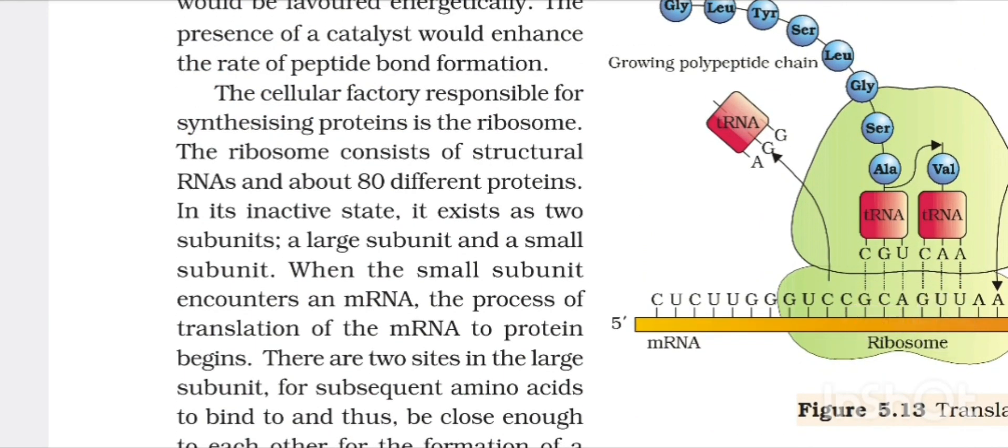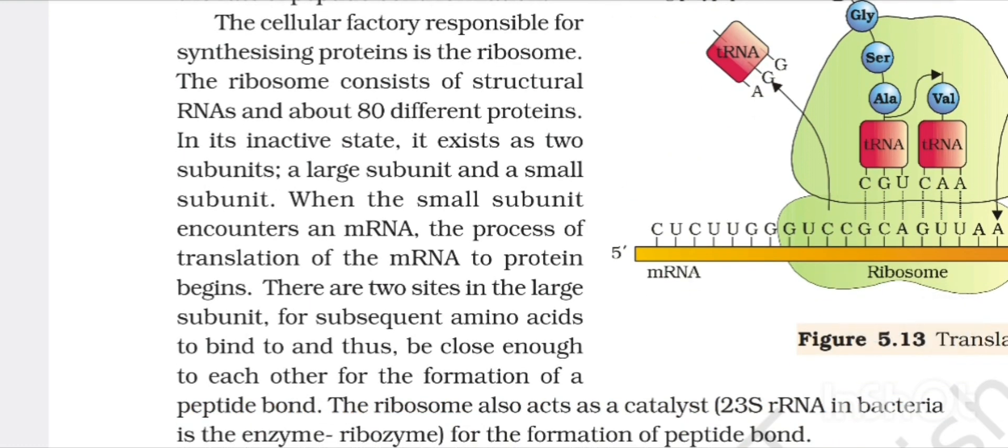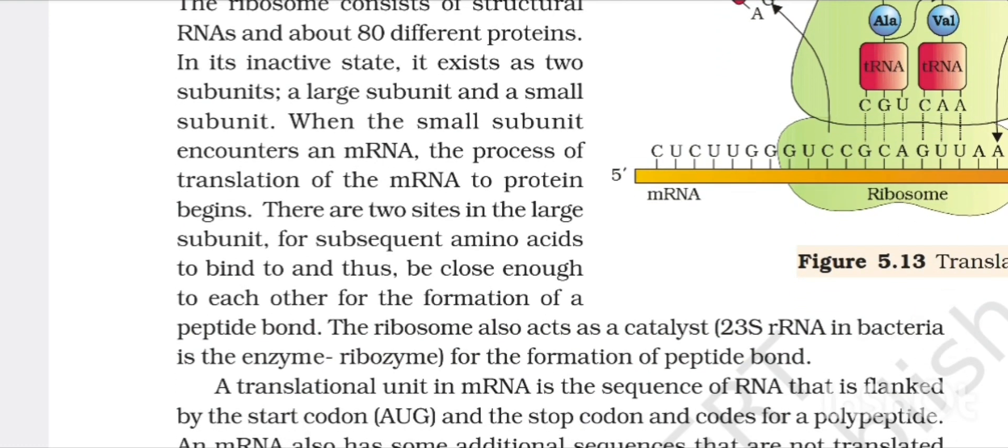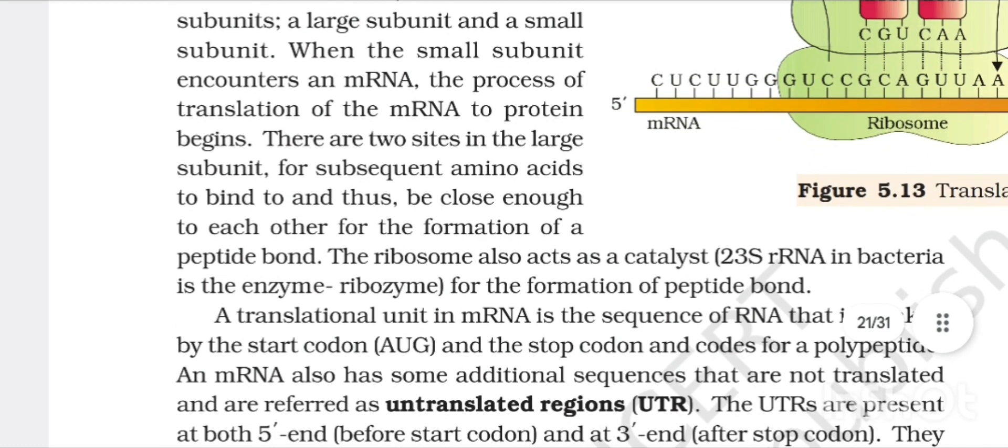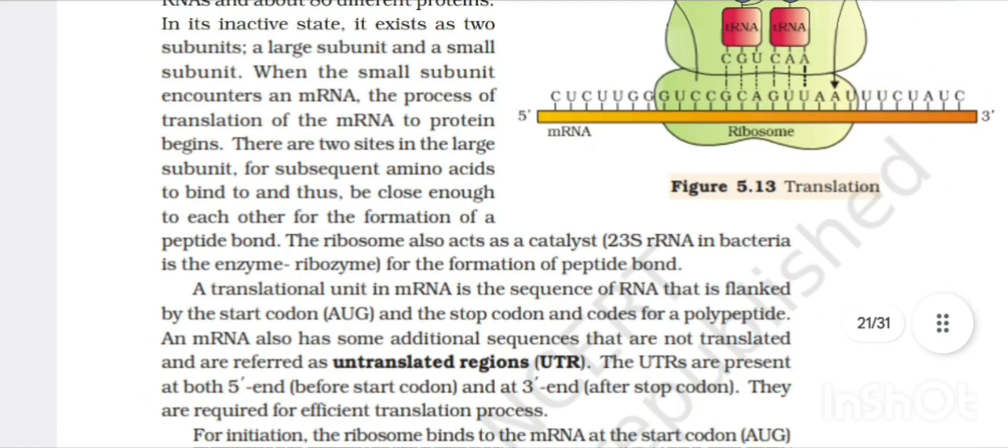The cellular factory responsible for synthesizing protein is the ribosome. Ribosome consists of structural RNA and different types of proteins. In its inactive state it exists as two subunits but when mRNA attaches to it in the smaller subunit for the process of translation, the two sites in the large subunit allow subsequent amino acids to bind and thus be close enough to each other for the formation of peptide bond. At first the mRNA attaches with the smaller subunit, then the larger subunit attaches to it. Ribosome also acts as catalyst for the formation of peptide bond.